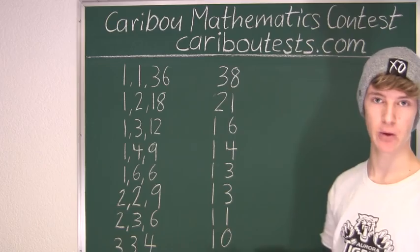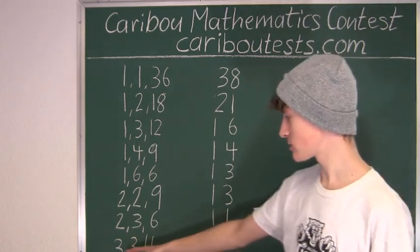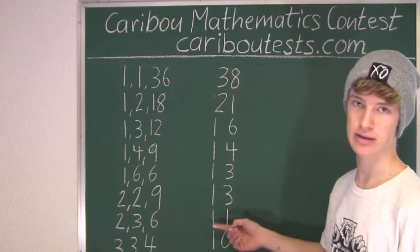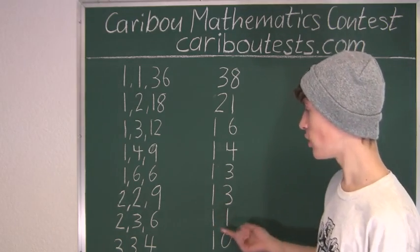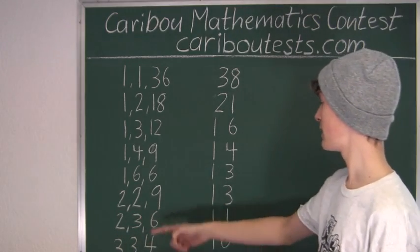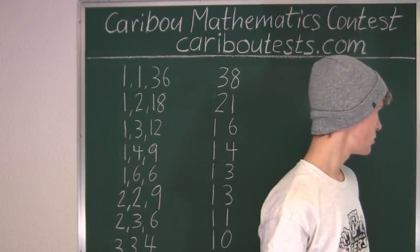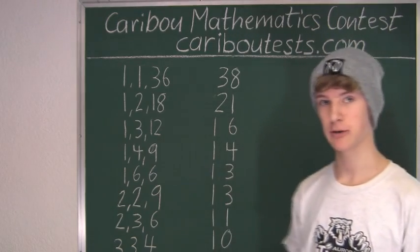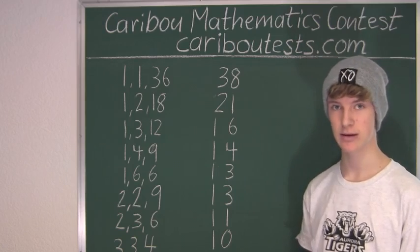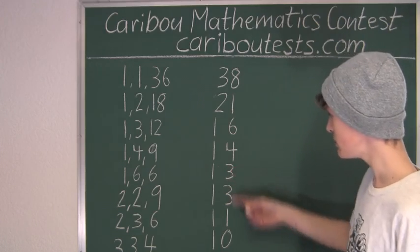For example, if we knew that the sum would be 10, then we would know that the ages would be 3, 3, and 4. If we knew that the sum was 11, the ages would have to be 2, 3, and 6. But since the question says knowing the sum does not give the three numbers, it must be a sum that appears at least twice. And the only sum here that appears at least twice is 13. So the ages must be either 1, 6, and 6, or 2, 2, and 9.